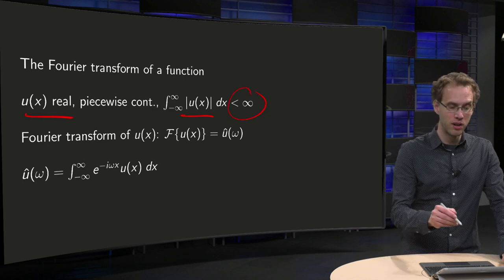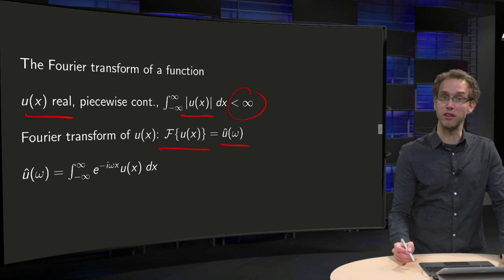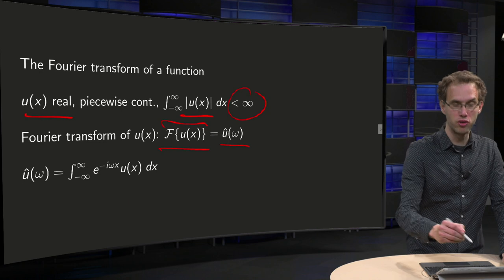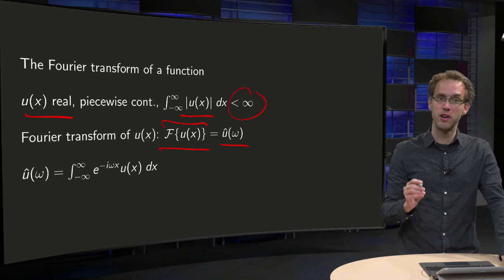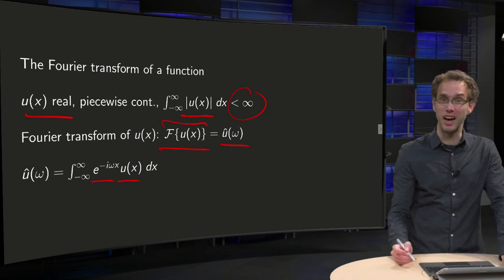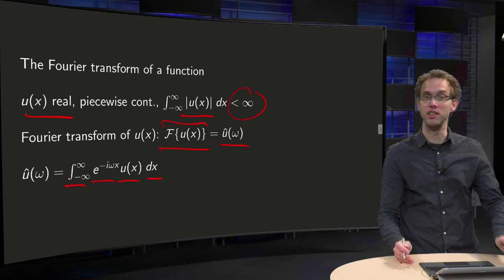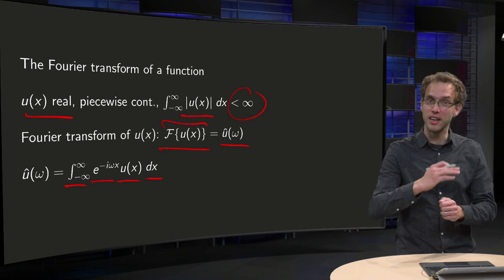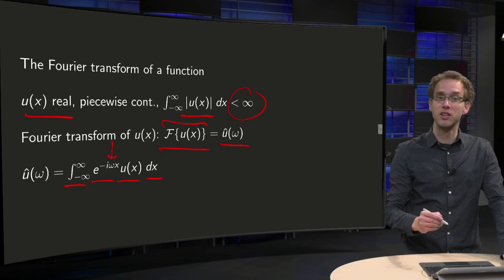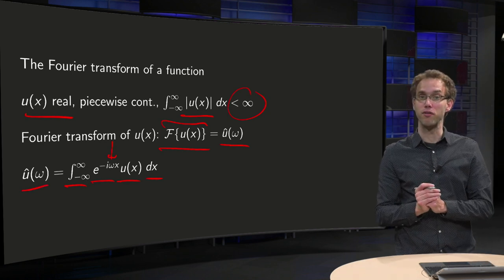How do we do that? We write the Fourier transform of u of x as u-hat of omega. So u-hat of omega will be our new function, and it is often denoted with this curly F of u of x. What do we do? We take our u of x, multiply by e to the power of minus i omega x, and then integrate with respect to x from minus infinity to infinity. After this integration, x has gone because we have integrated with respect to that, and only omega is left. What we have left is some function u-hat of omega, and that is the Fourier transform of u of x.